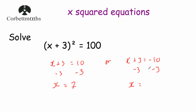Let's check both answers. For x equals 7: 7 plus 3 is 10, and 10 squared equals 100 ✓. For x equals negative 13: negative 13 plus 3 is negative 10, and negative 10 times negative 10 is positive 100 ✓. So those are our two solutions: x equals 7 and x equals negative 13.